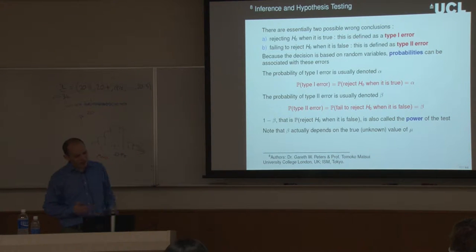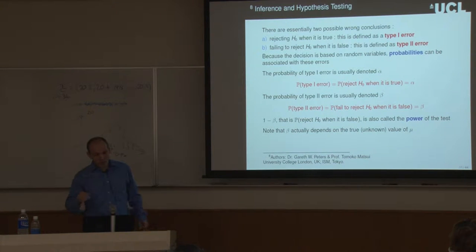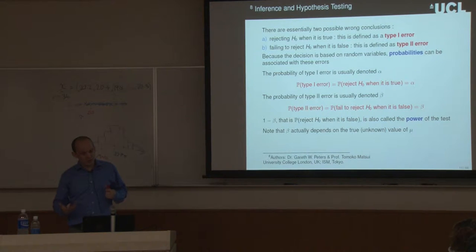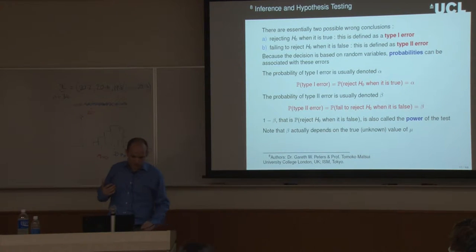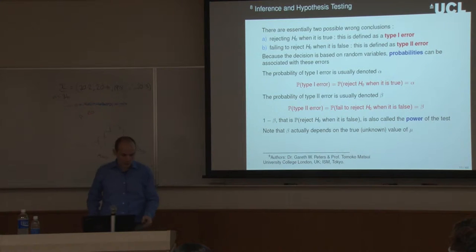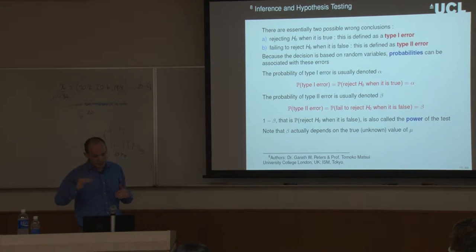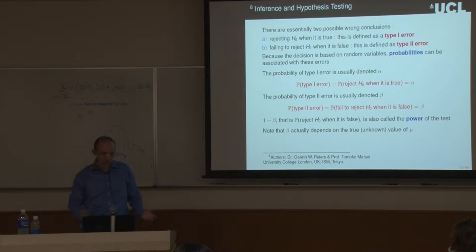Depending on the type of hypothesis testing you're carrying out, will determine how important alpha and beta are. The origins of these tests are in court trials, where you don't want to convict an innocent person — innocent until proven guilty. Here alpha is of utmost importance, so you cap alpha first and then consider beta as secondary. But this may not be the case in every example.